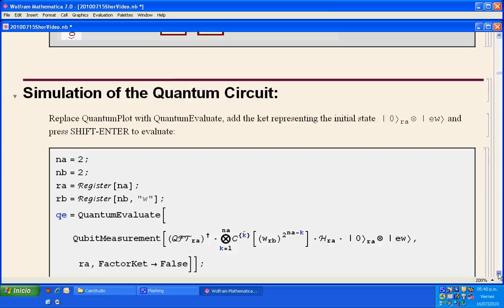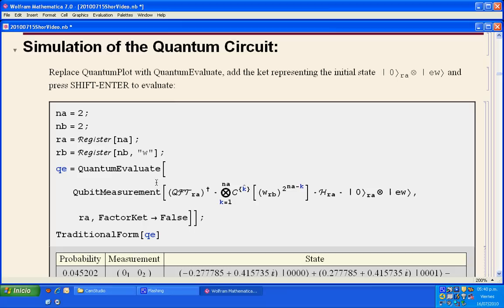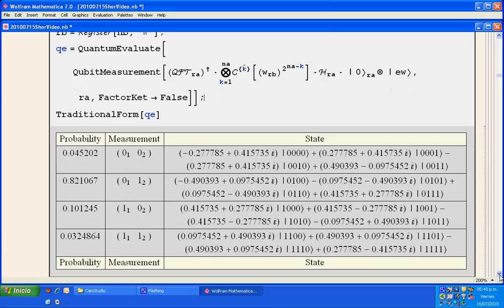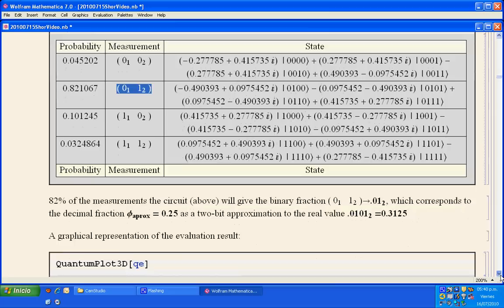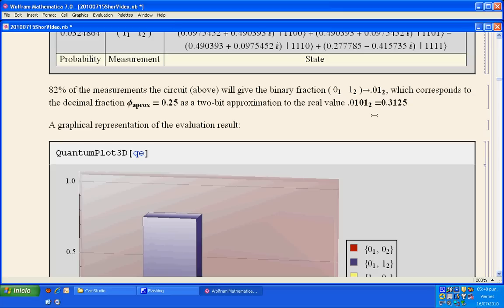In order to simulate the quantum circuit to get the result of the measurement, we just replace the word quantum plot above by the word quantum evaluate. And then instead of having the plot of the circuit, we have the simulation of the circuit. We get the probability of each measurement output. And we have that 82% of the times we're going to get 01 as a measurement. And 01 is precisely a good approximation to 0101 as a binary fraction: 0.01 as an approximation to 0.0101.